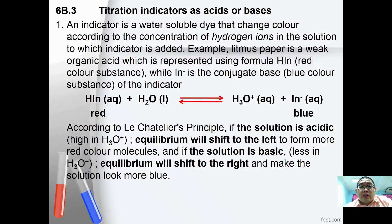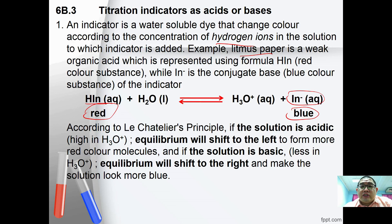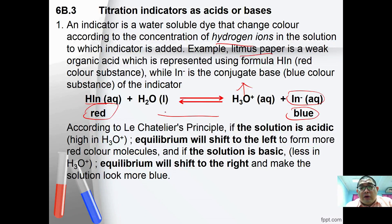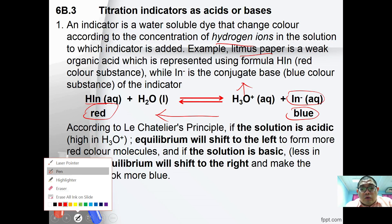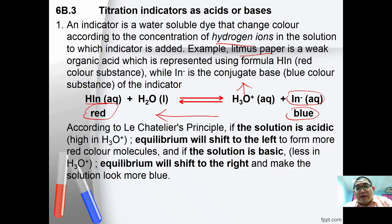Next, we look at titration indicators for acid-base reactions. An indicator is a water-soluble dye that changes color according to the concentration of hydrogen ions. Litmus paper is a weak organic acid represented as HIn — in its acid form it shows red color, while its conjugate base In⁻ shows blue. Applying Le Chatelier's principle: in acidic solution, high [H₃O⁺] shifts equilibrium left, showing red.